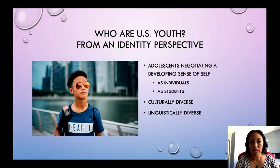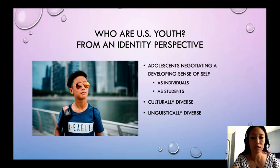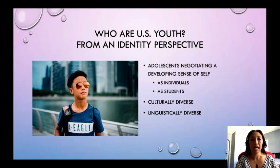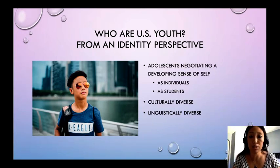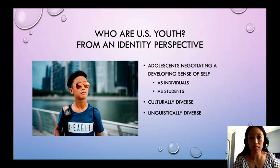So that gives us the demographics of youth, but who are American youth from an identity perspective? Adolescents are negotiating a developing sense of self, both as individuals and as students. What that means is they will need from you respect, engagement, and acknowledgement of who they are. They're particularly vulnerable at this developmental stage to social influence and really long for belonging. Adolescence is the time in students' lives where they shift from seeking adult approval to seeking peer group approval, and when they relate to adults they are looking more for guidance and support rather than just being told what to do.